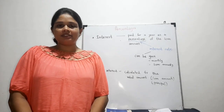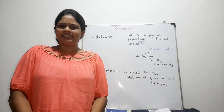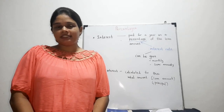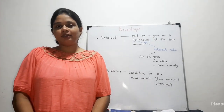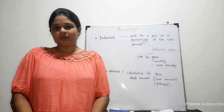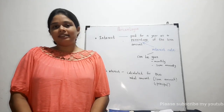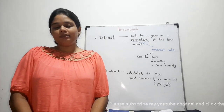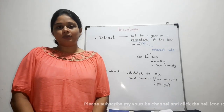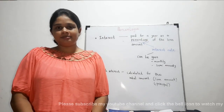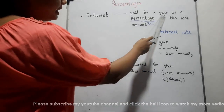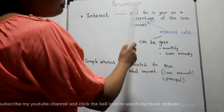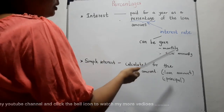Under this lesson, first I am going to discuss the part on interest. What is interest? Think about when we take a loan from an institution or a person for a certain period of time — at the end of the period, we have to pay an extra amount when we settle the loan. That extra amount is called interest. Similarly, when we deposit money in a bank or financial institution for a certain period of time, at the end of the period, we receive an extra amount. That extra amount is also called interest. This interest is paid for a year as a percentage of the loan amount. This percentage is called the interest rate.